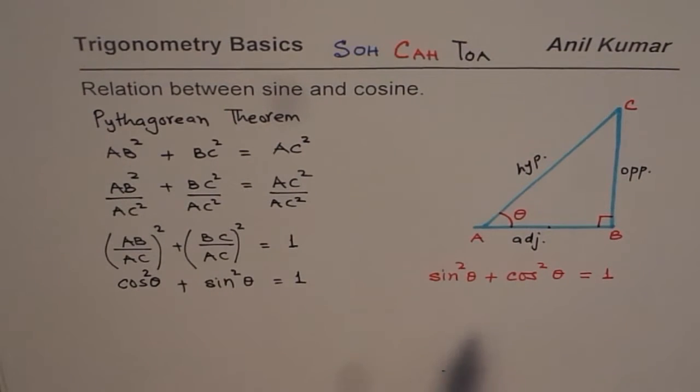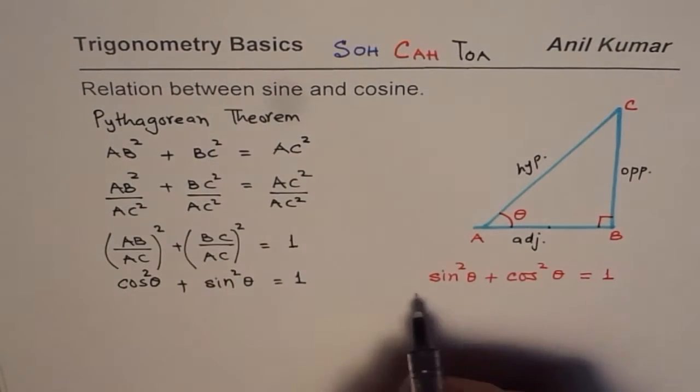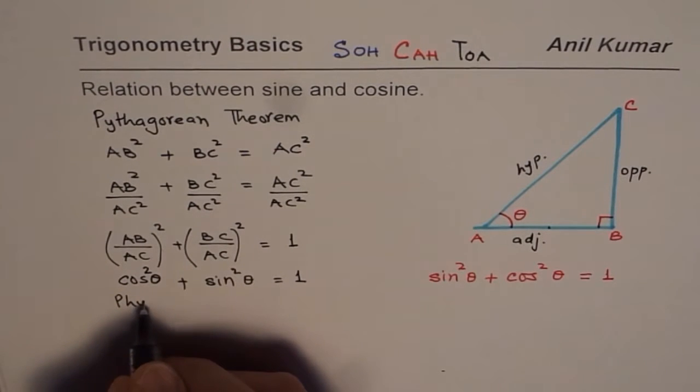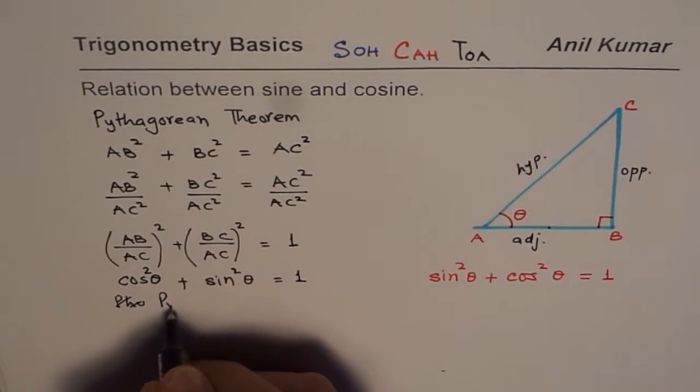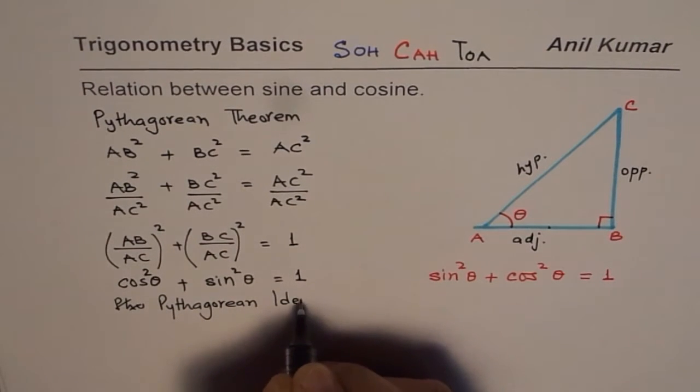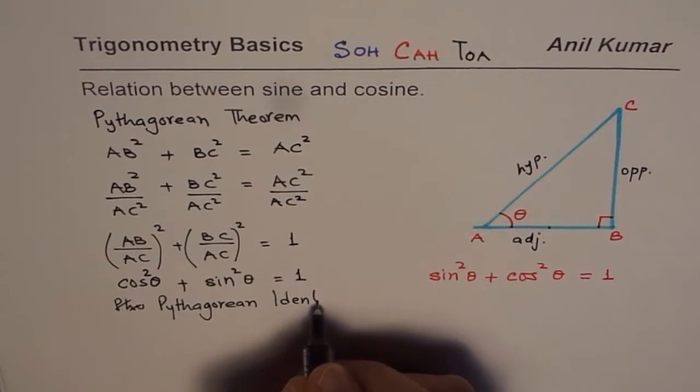Now since we used Pythagorean theorem to derive it, in trigonometry also this relation is called Pythagorean identity.